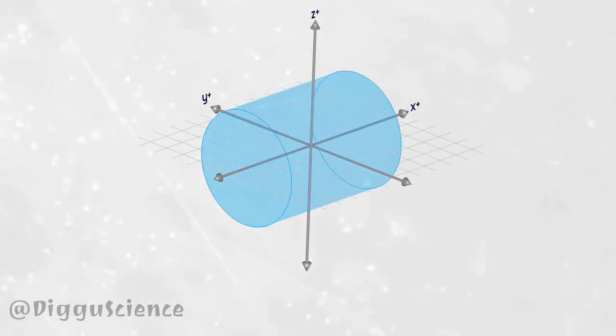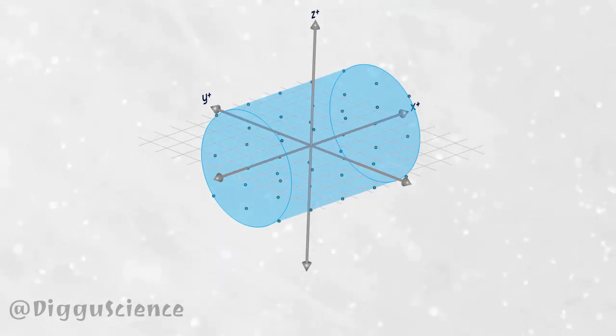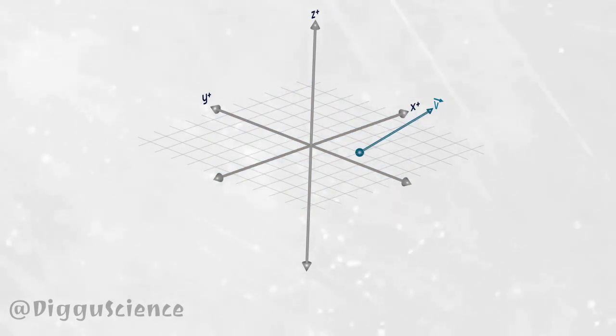Fluids can flow in three-dimensional space. In this space there are several points, each of these points has a different speed both magnitude and direction. Because speed is a vector quantity, the speed vector has component vectors.